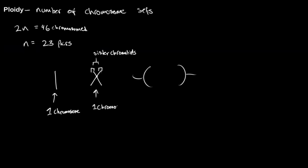When these chromosomes in anaphase — when we were talking about it in mitosis and in meiosis — when they split apart, now we can officially consider them as two separate chromosomes. Now this is considered two chromosomes.